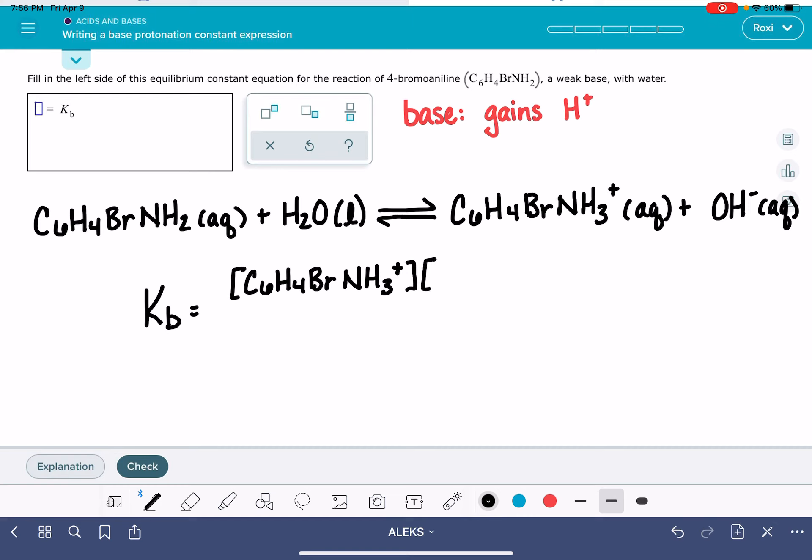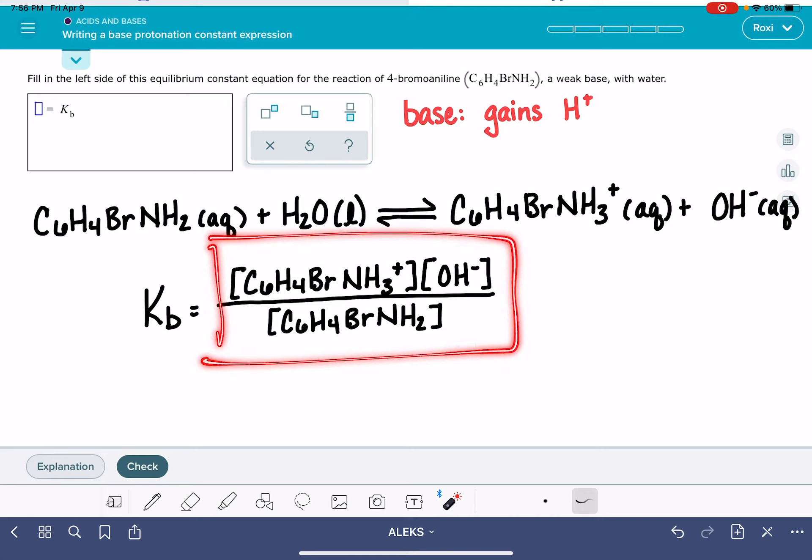You have to put the formula of each product and each reactant inside square brackets. It has to be square brackets. It can't be parentheses. C6H4BrNH3 plus OH minus over C6H4BrNH2. These equations will always have one-to-one-to-one stoichiometry. That's just how it always ends up, so you won't have to worry about any subscripts. This right here is the correct answer to this problem.